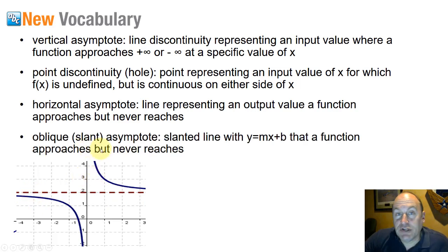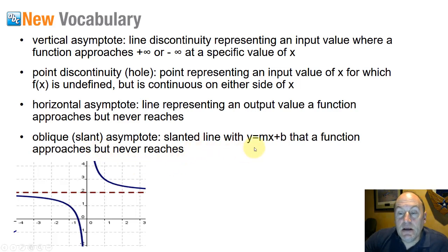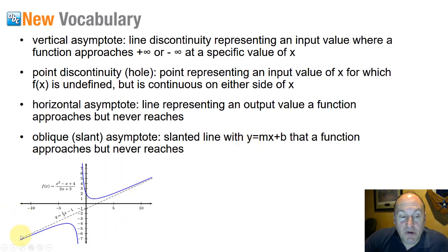It'll get really close to it as x approaches positive infinity or negative infinity, but it never actually reaches it. The last thing we're going to look at is called an oblique or slant asymptote, which occurs in certain special cases with reciprocal functions. This is a slanted line that the function approaches but never reaches — instead of a horizontal line, we have something where the function approaches a slanted line limit.